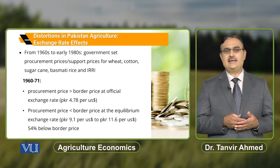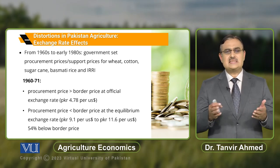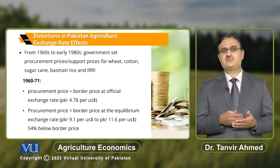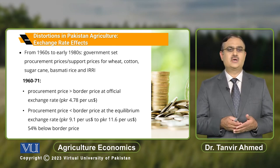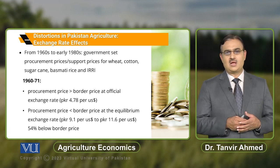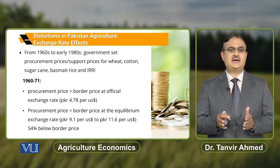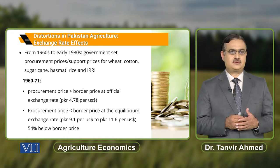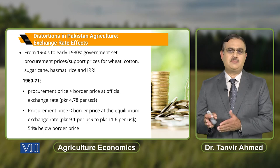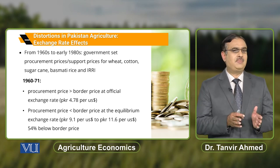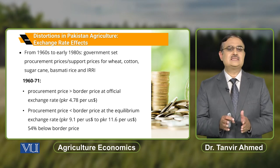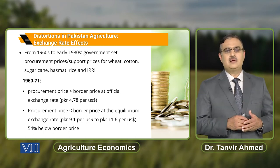With reference to the fixed exchange rate that prevailed during 1960–1980, during this time period the government sets procurement prices for wheat, cotton, sugarcane, basmati rice, and IRRI. At the official exchange rate of PKR 4.78 per US dollar, the procurement price for these crops is greater than the border price.